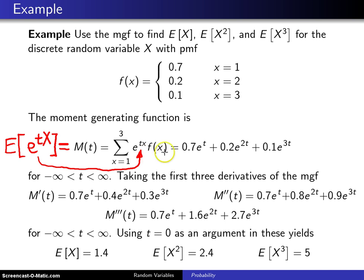So this will be f(1) multiplied by e^t, plus f(2) multiplied by e^(2t), plus f(3) multiplied by e^(3t). This is a lot easier than the previous example in terms of the range of t. This expression is good for all t from minus infinity to infinity. You don't have to worry about integrals converging or anything of that nature.